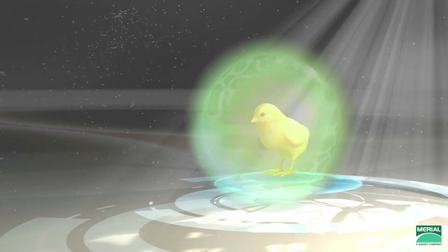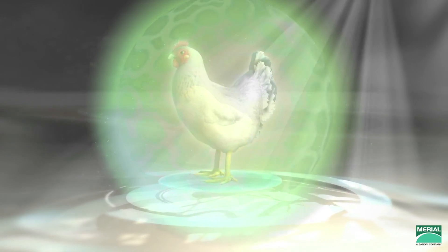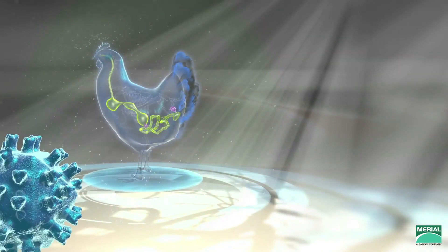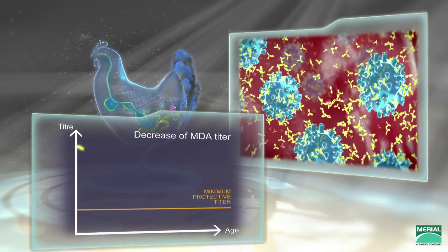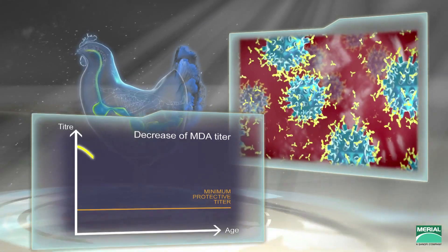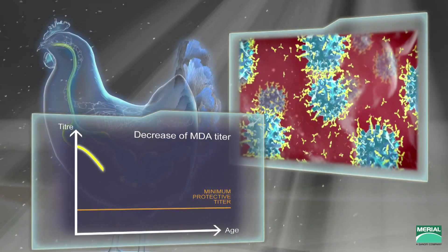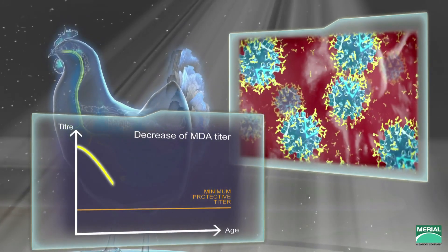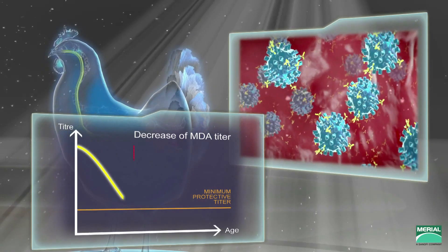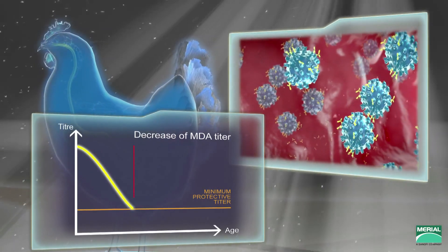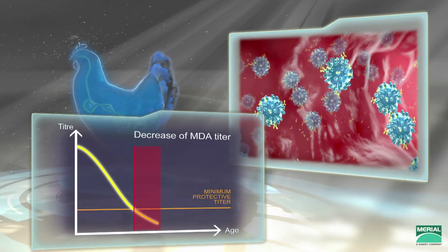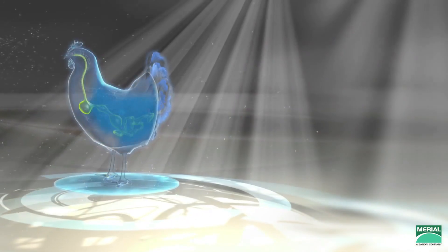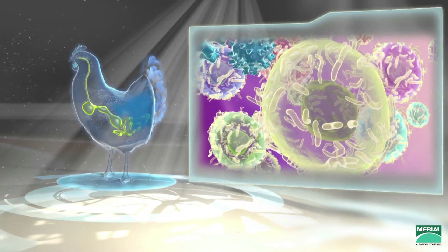Chicks hatch with high levels of IBDV maternal antibodies that decline as the chicken grows. The IBD virus enters the intestinal tract and then blood vessels. The IBDV maternal antibodies protect the chicks from IBDV infection until the level falls below the protective threshold, allowing the virus to reach and infect the Bursa.